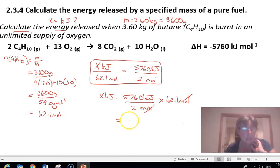When you calculate that you'll find that you get 179,000, which is the same thing as 1.79 × 10^5. Make sure you have your units: kilojoules.